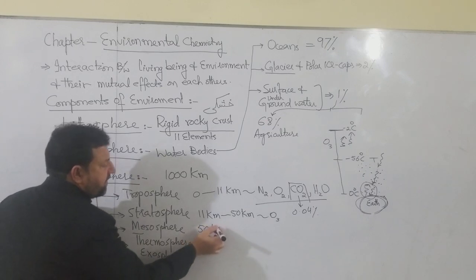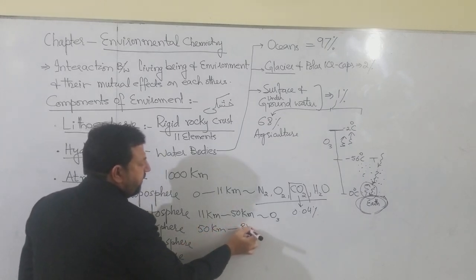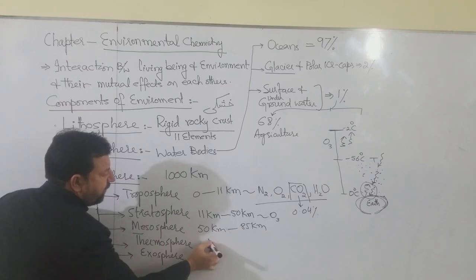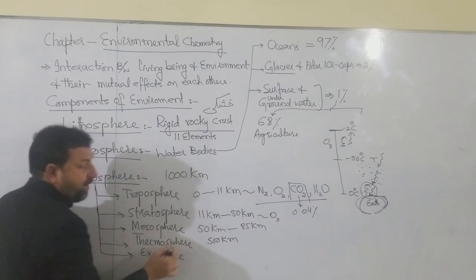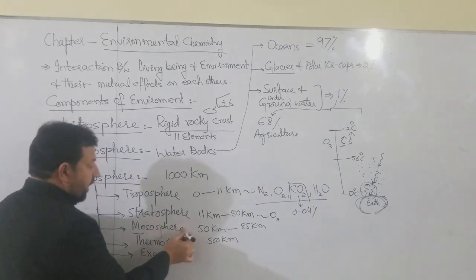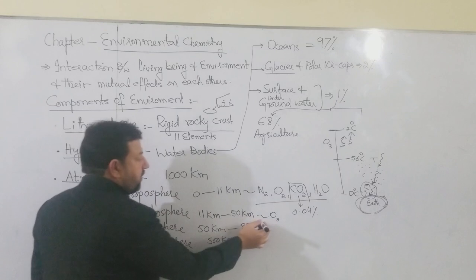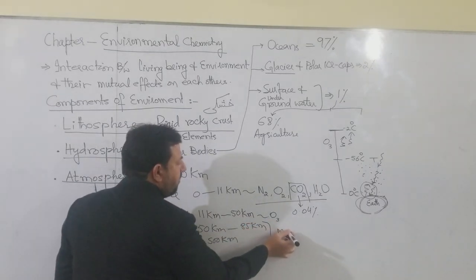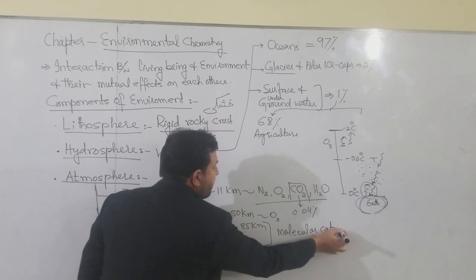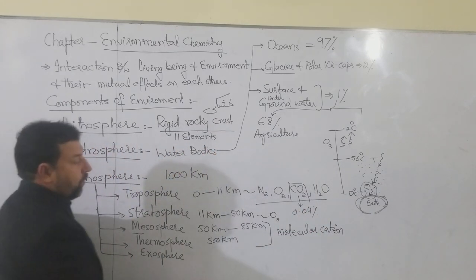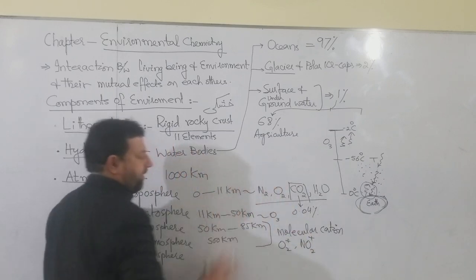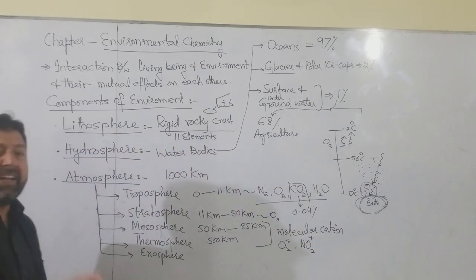Mesosphere 50 کلومیٹر سے لے کر تقریباً 85 کلومیٹر تک ہے۔ Thermosphere تقریباً 500 کلومیٹر تک، اور 500 کلومیٹر سے اوپر کے region کو Exosphere کہتے ہیں۔ ان دونوں میں molecular cations — یعنی positively charged molecules — ہوتے ہیں۔